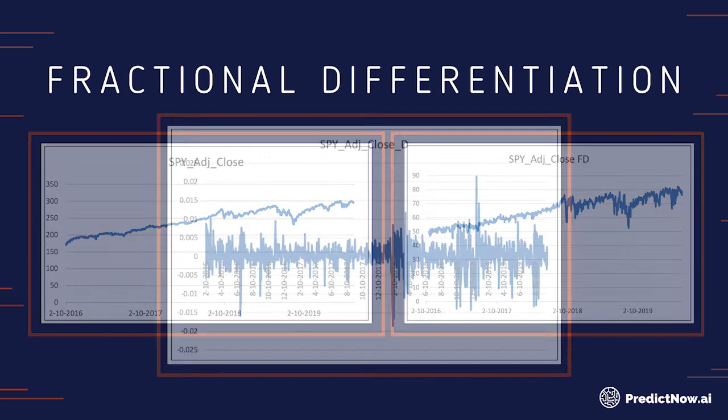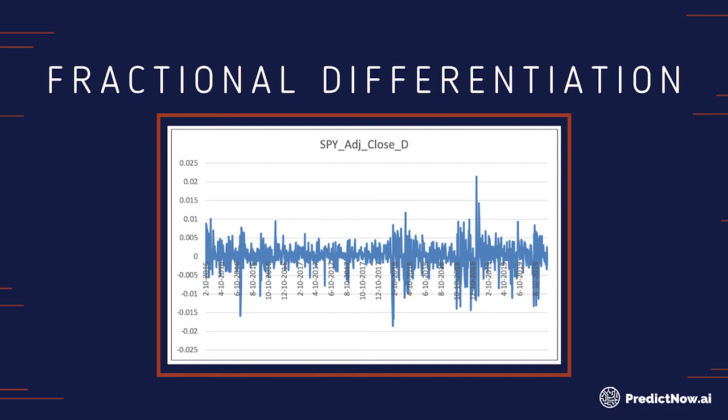If you're interested, you can also compare with integer differentiation. Normally, to convert a non-stationary time series to a stationary time series, what you can do is just take the difference or the log difference. The log difference turns into log return. And you can see that in this chart, the log difference generates a very much white-noise-looking graph. But it loses many of the characteristics of the original time series — it doesn't look at all like the original time series.